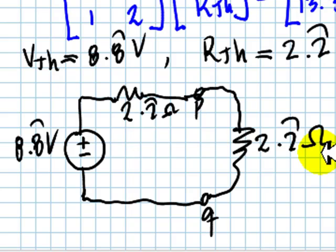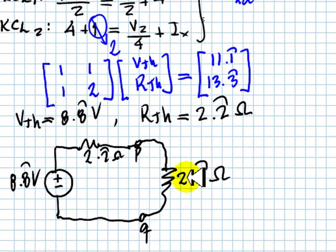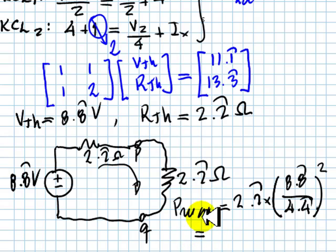And for part C, what is the maximum power? Just the power in this resistor. And that power is total current squared multiplied by this resistance. So, Pmax is 2.2 multiplied by this current squared, which is 8.8 periodic volts divided by 4.4 periodic ohms. And that maximum power is 8.8 periodic watts.